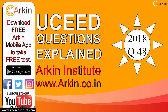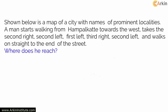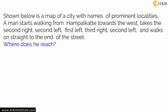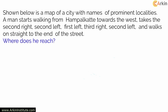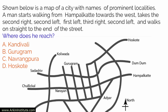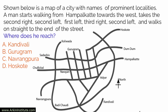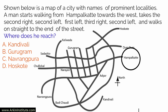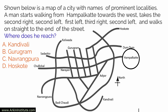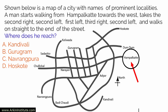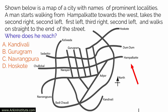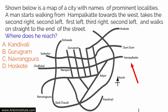Question number 48. Shown below is a map of a city with names of prominent localities. A man starts walking from Hampalkate towards the west, takes the second right, second left, first left, third right, second left, and walks on straight to the end of the street. Where does he reach?